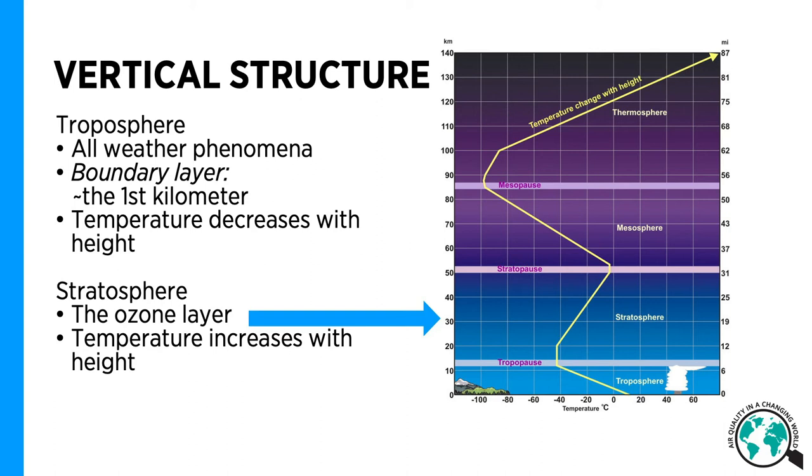Above the tropopause we have the stratosphere, where we are very lucky to have the ozone layer. The ozone absorbs ultraviolet radiation coming from the sun and prevents it from reaching the surface of the Earth. Ultraviolet radiation is harmful for living cells. This absorption of ultraviolet radiation also increases temperatures in the stratosphere. In the stratosphere, temperature increases with height.